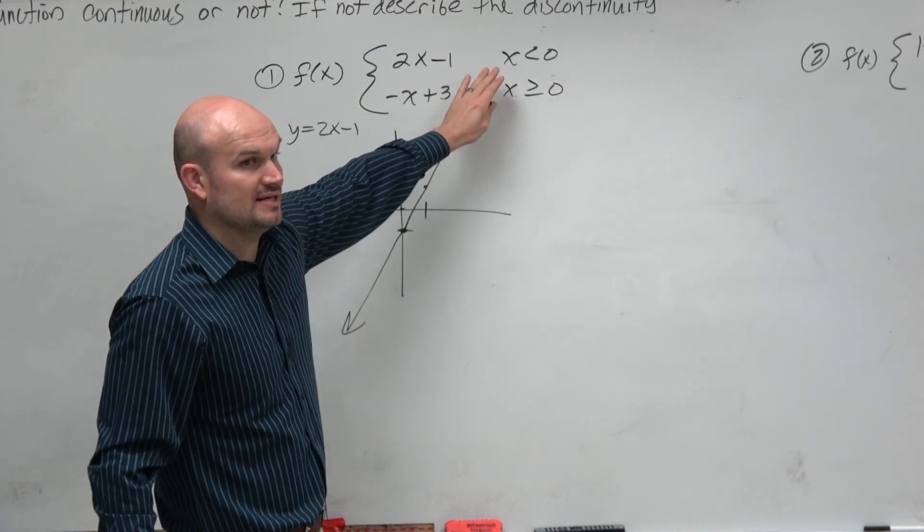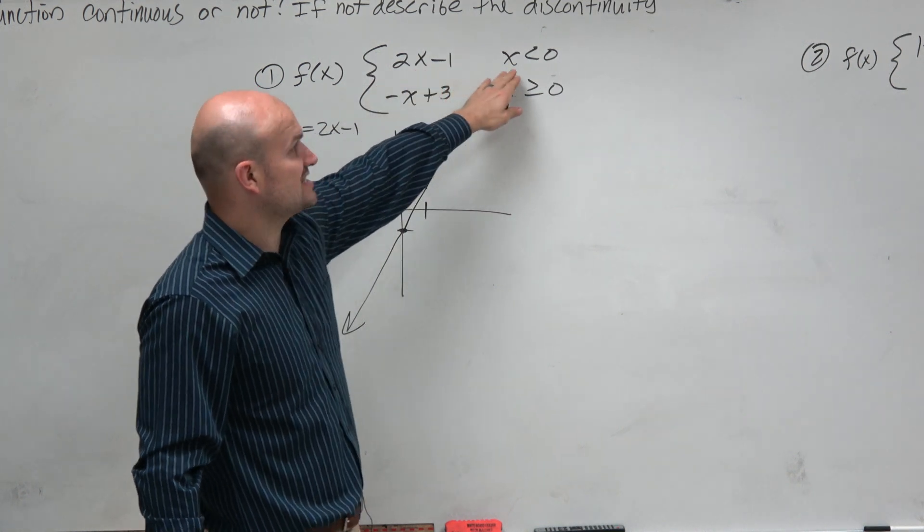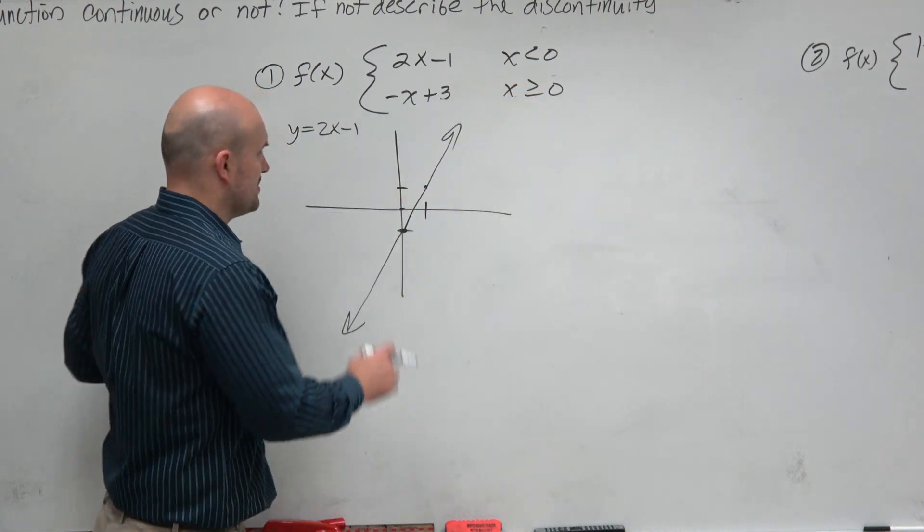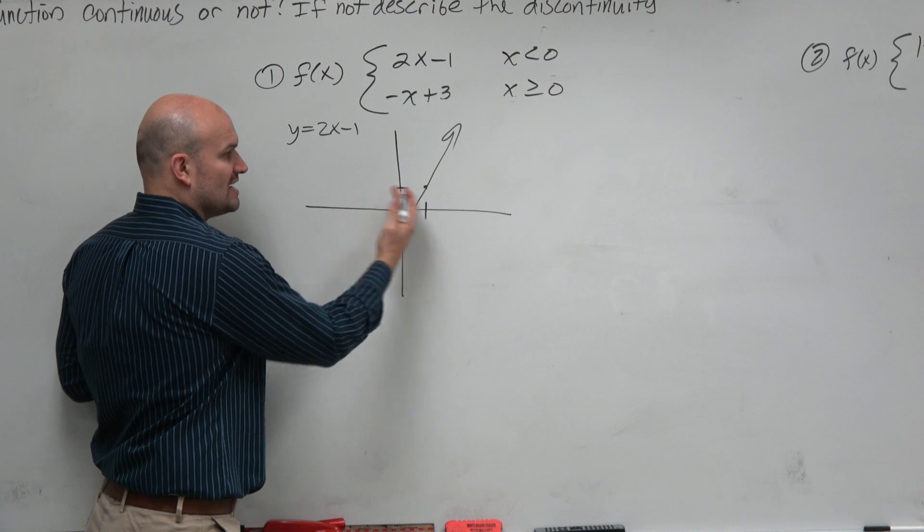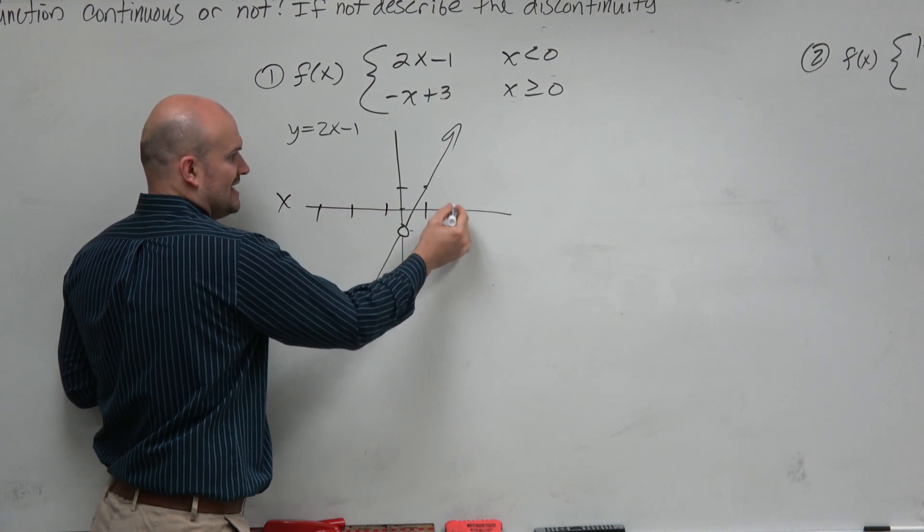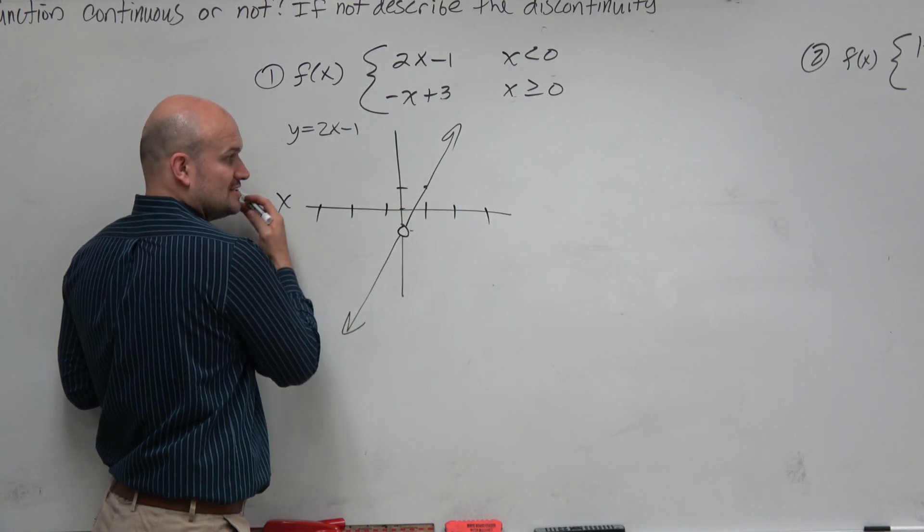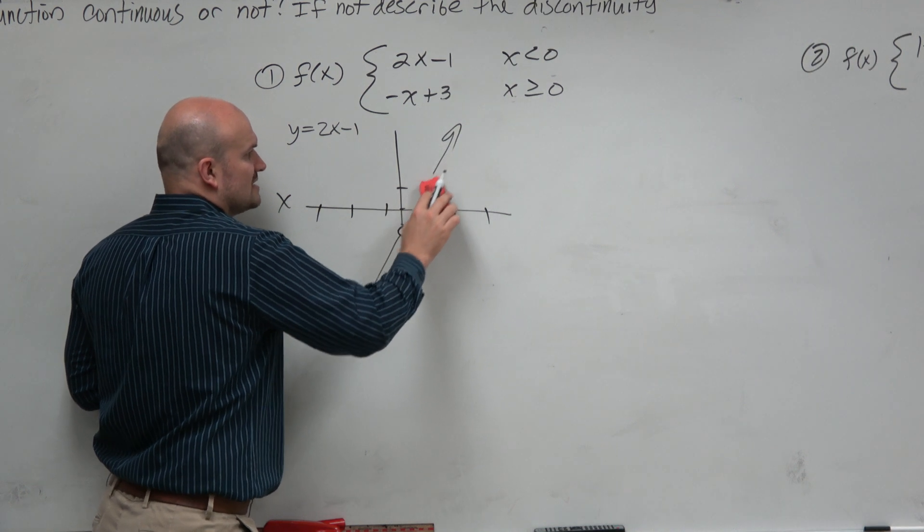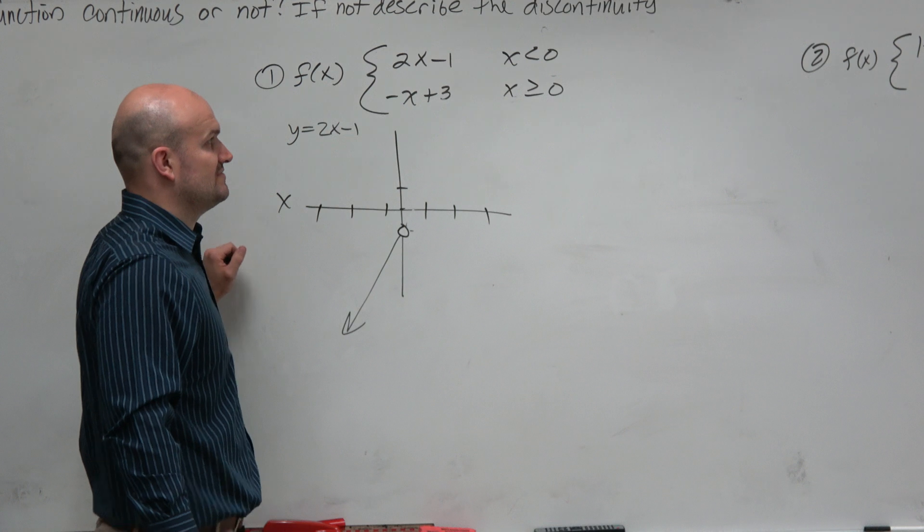Now I'm going to apply the constraint. The constraint says I only want you to graph this equation for x values that are less than 0. That means 0 is not defined, so I'm going to put a nice little open circle there. X values that are less than 0 are only going to be to the left. That means I'm going to erase the rest of the graph that's in the positive, for positive x values.